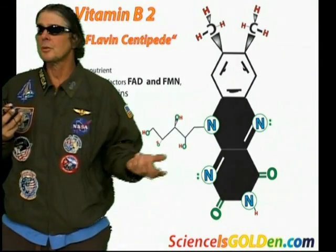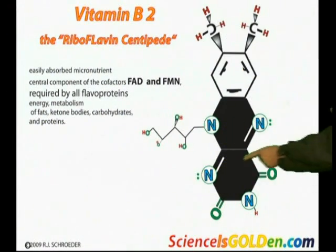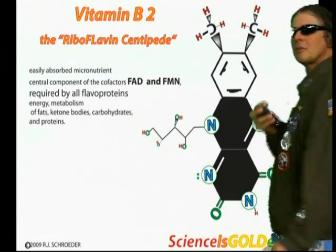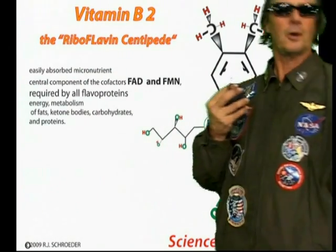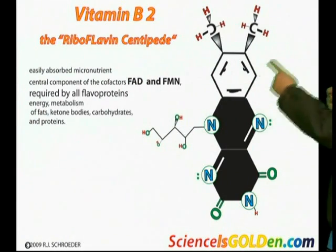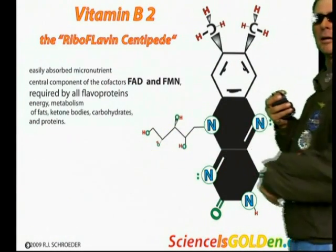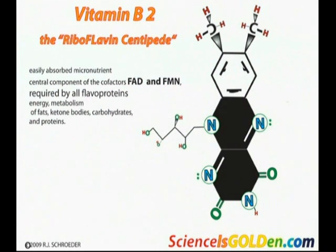In photosynthesis, enzymes are harvesting light energy and moving electrons around. These nitrogens down here can take electrons. You're going to find enzymes — the chemical structures are going to be just mind-boggling. There are a hundred atoms right there. When you see the riboflavin centipede hanging off a ruby ribose holding adenosine, it's going to be kids' play. It's a central component of the cofactors FAD and FMN, required by all flavoproteins.